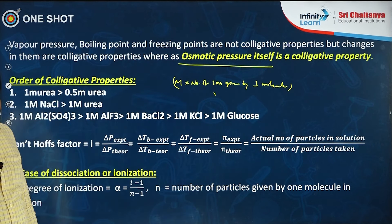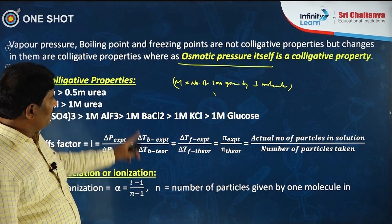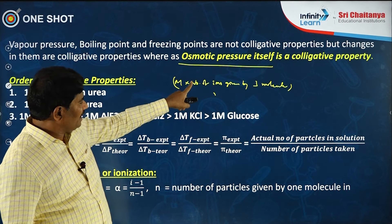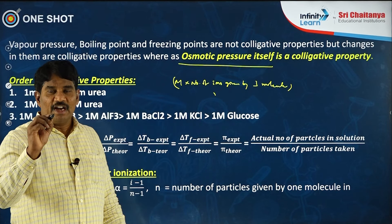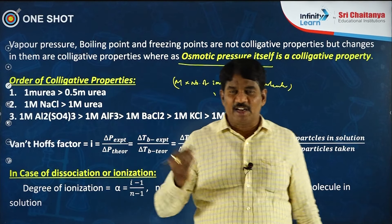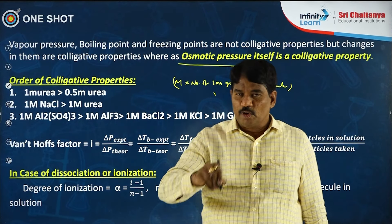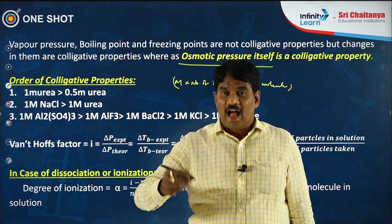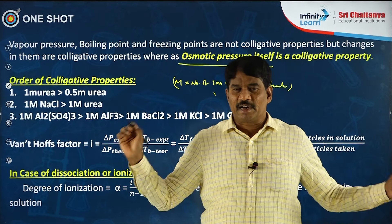If we compare two different electrolytes, the solution that contains a greater value of molarity multiplied by number of ions given by one molecule will have greater colligative properties. Greater colligative properties means that solution will have the least vapor pressure, highest boiling point, least freezing point, and highest osmotic pressure.